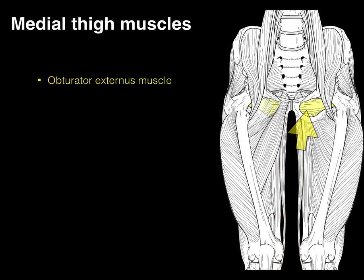The obturator externus arises from the external surface of the obturator membrane, courses behind the hip joint to go to the greater trochanter, and this is an external rotator of the hip.